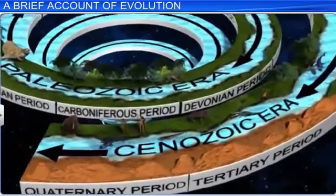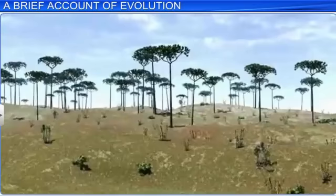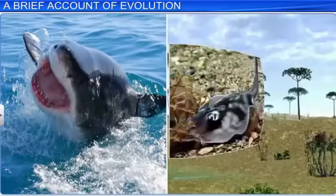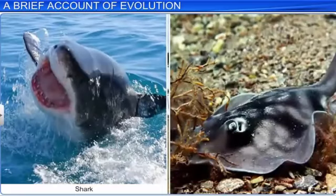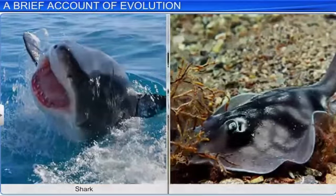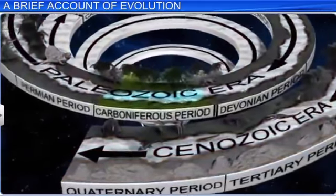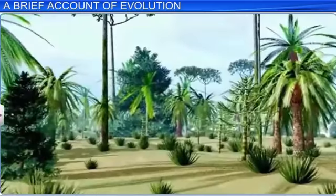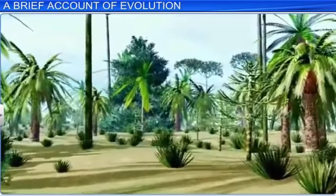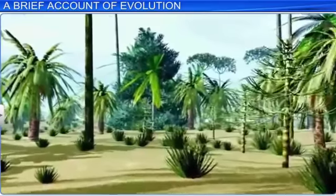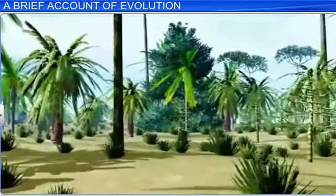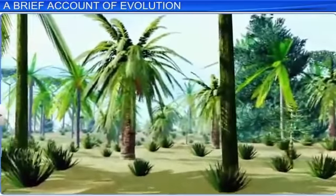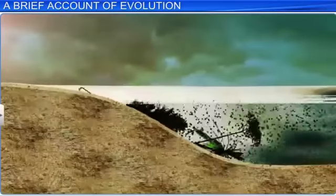Next came the Devonian period, in which plants grew in profusion and covered a large part of the land. This period also witnessed a rapid evolution of fish such as sharks and rays. About 300 million years ago, in the Carboniferous period, pteridophytes such as ferns and horsetails dominated the earth. They were the first trees that thrived in vast swamps that stretched across the length and breadth of the planet. Over the years, these pteridophytes fell down and formed coal deposits.